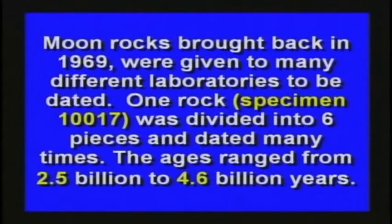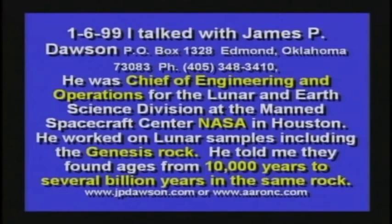James Dawson was one of the guys working on dating the moon rocks. He took specimen number 10017, divided it into six pieces, and tested it many times. They got numbers ranging from 2.5 billion to 4.6 billion — a 500% error. He was Chief of Engineering and Operations for the Lunar and Earth Science Division of the Manned Spacecraft Center in NASA in Houston. He told me they found ages from 10,000 years to several billion in the same rock. How can one rock be 10,000 years old and several billion years old at the same time? Something is wrong.